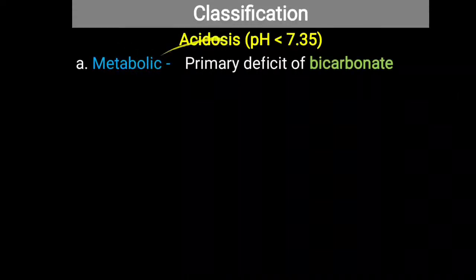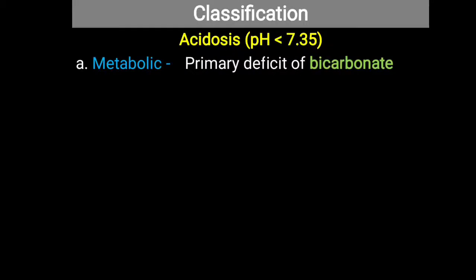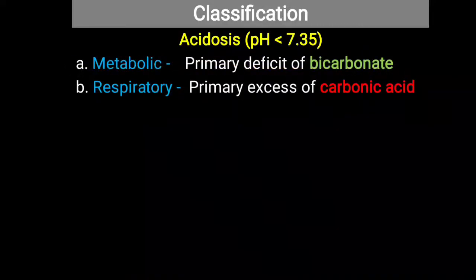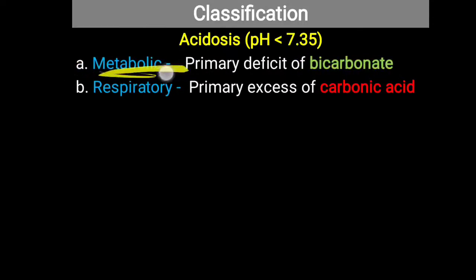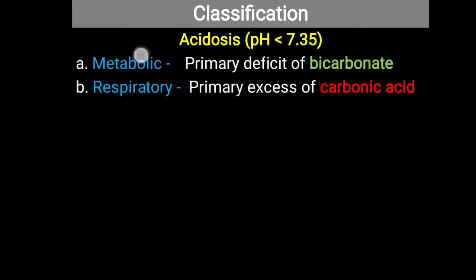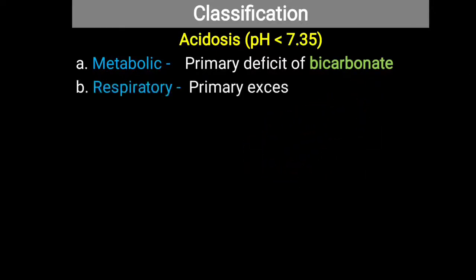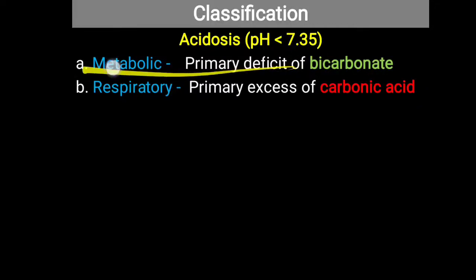Normal pH ranges from 7.35 to 7.45. A pH less than 7.35 indicates acidosis. In acidosis, there are two possibilities: metabolic or respiratory. For metabolic acidosis, remember the mnemonic 'MB' — metabolic is related to bicarbonate. There is a deficiency of bicarbonate ions leading to metabolic acidosis. In respiratory acidosis, there is a primary excess of carbonic acid due to excess carbon dioxide.